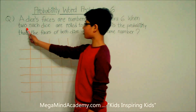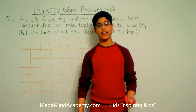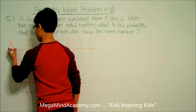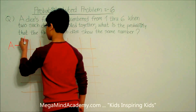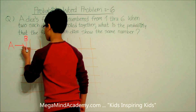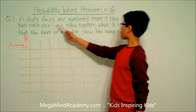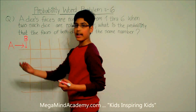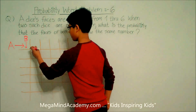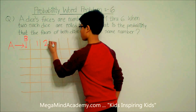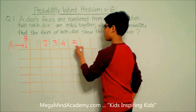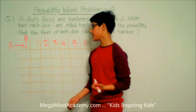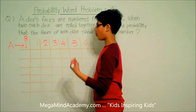So it says that there are two such dice. Let's name these dice as Dice A and Dice B. Now it says that the dice's faces are numbered from 1 through 6. So that means Dice A has 6 faces numbered 1, 2, 3, 4, 5, and 6. And because these dice are both the same type, Dice B also has faces numbered from 1 through 6.